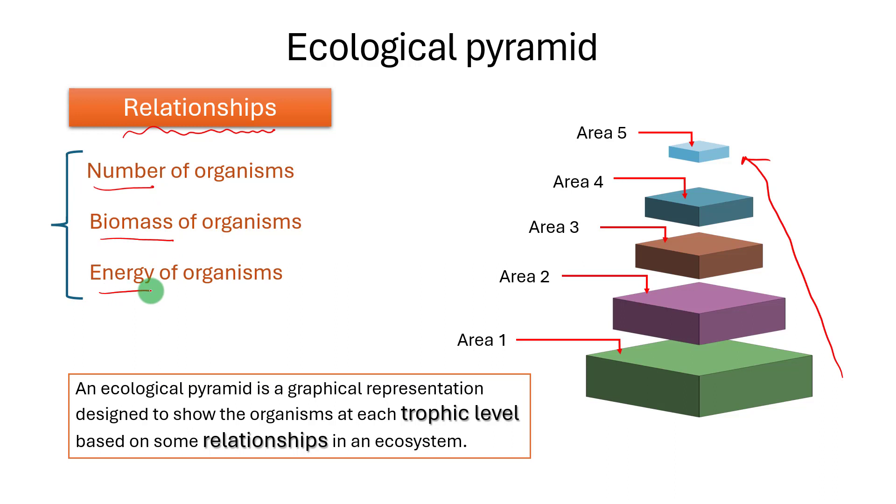Generally, three basic relationships are used for ecological pyramids: numbers, biomass, and energy.